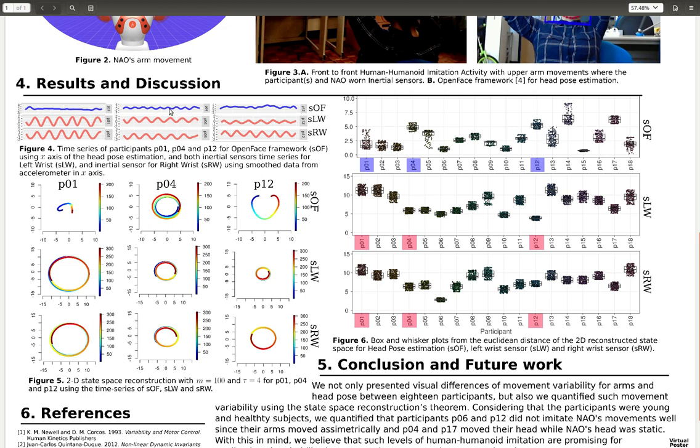In the case of head pose estimation, participant 4 was in synchronization with the arm movements, which can be seen with this one. And that behavior also happened to participant 17. And the other participants were quite static, were like participant 12 or participant 1.